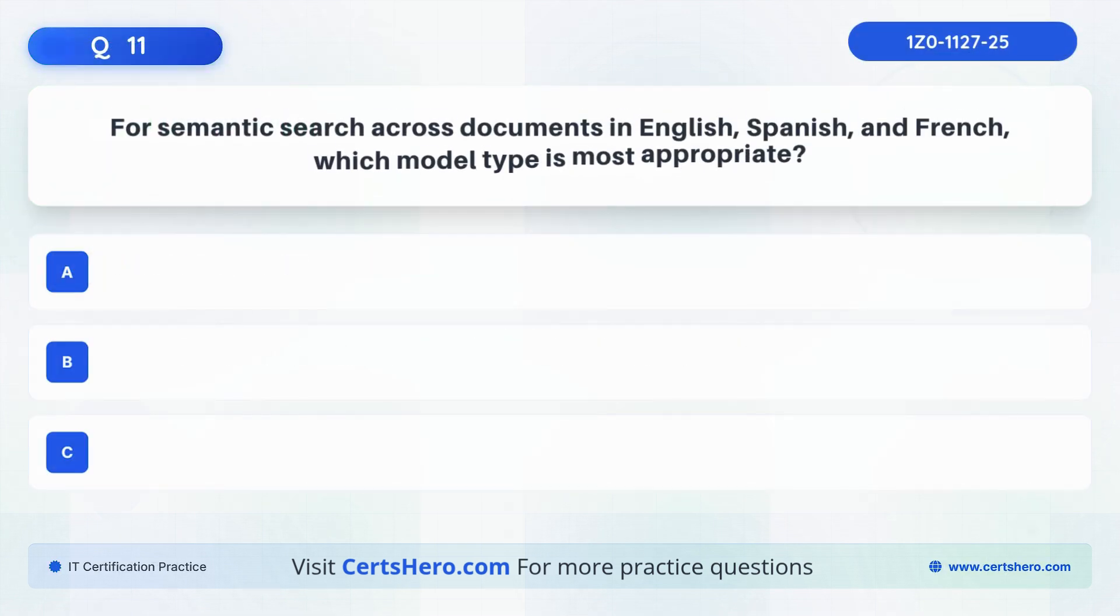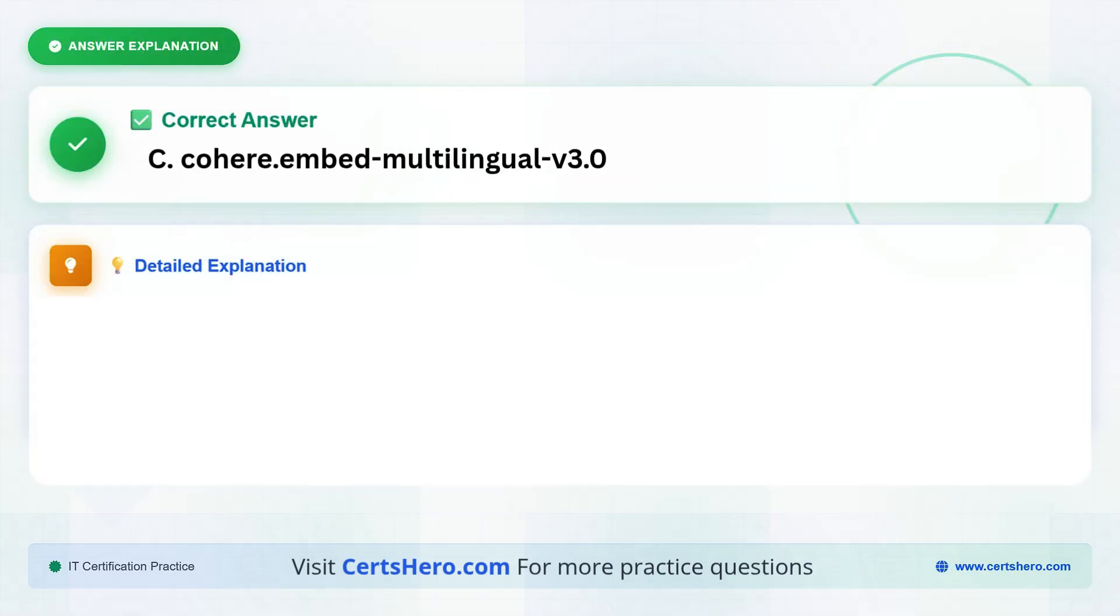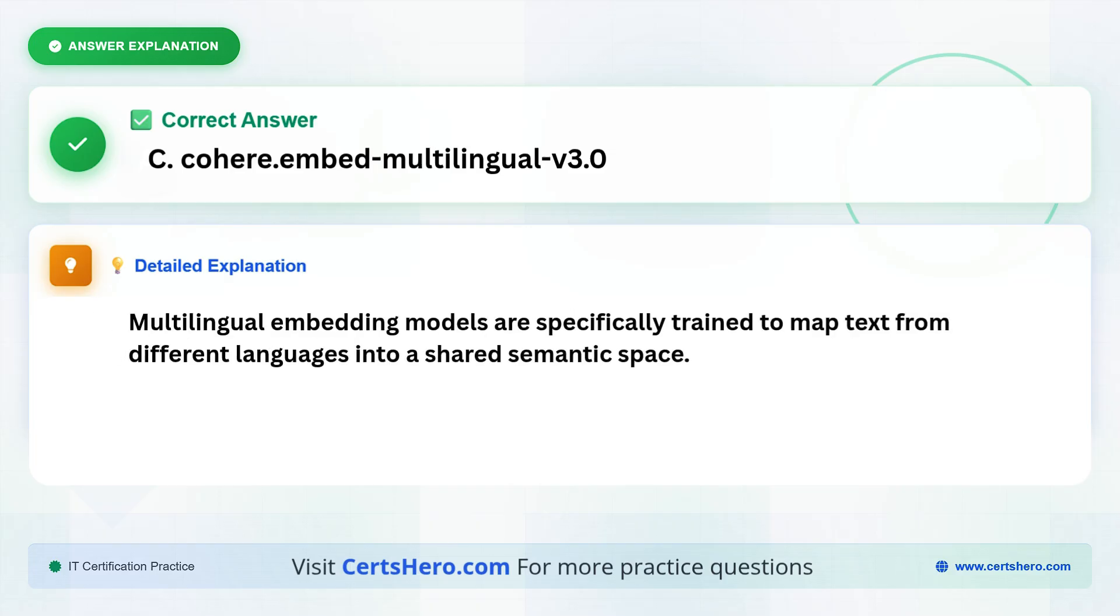Question 11. For semantic search across documents in English, Spanish, and French, which model type is most appropriate? Is it, Cohere Command, Cohere Embed English V 3.0, or Cohere Embed Multilingual V 3.0? The correct answer is C, Cohere.Embed Multilingual V 3.0. Multilingual embedding models are specifically trained to map text from different languages into a shared semantic space.